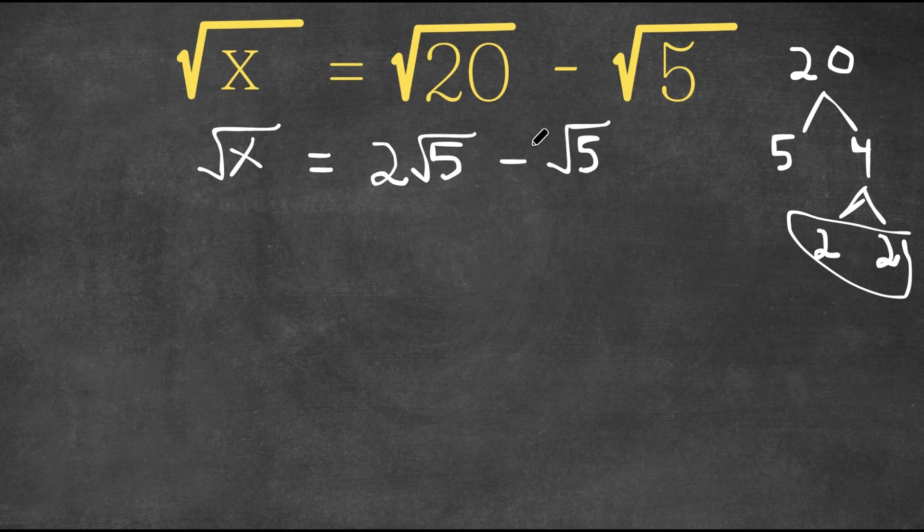And when we're doing like terms, we subtract the outside terms. So this square root of 5, this is actually 1 root 5. The outside number for this would be 1. So we're actually going to subtract 2 and 1 and leave the radical alone. We're not going to change the radical. So 2 minus 1, that's just 1.